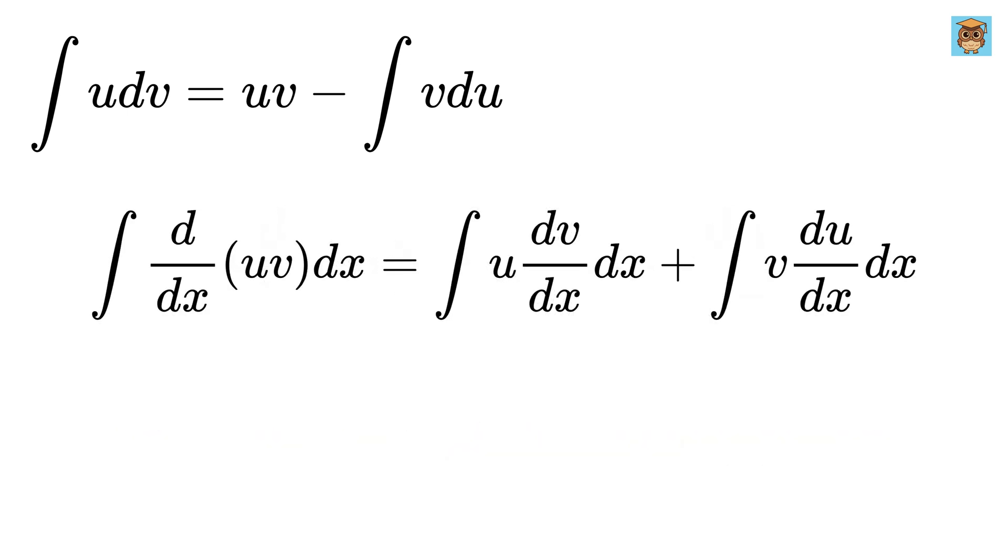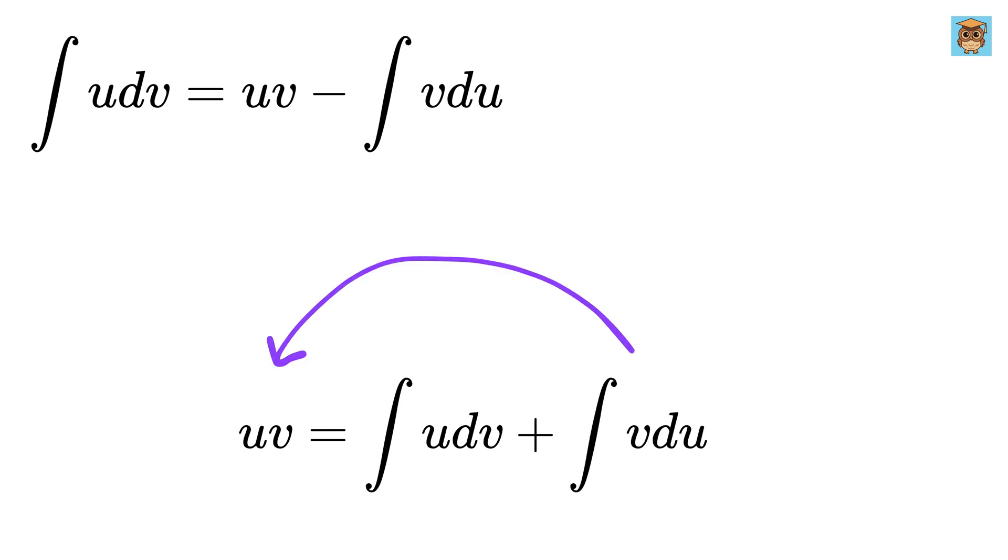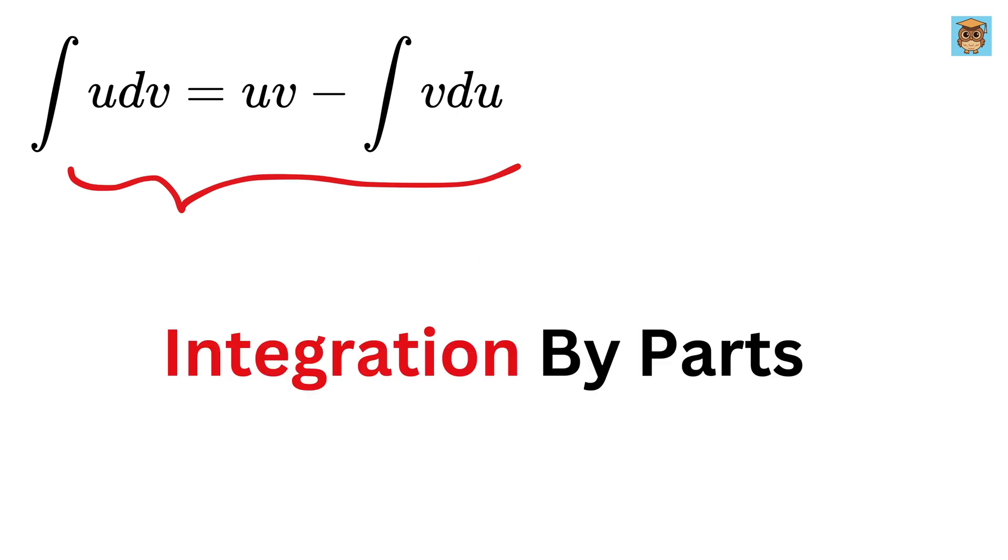Now integrate both sides with respect to x. Here both the integral and derivative will cancel out to make it uv. On right side both dx will get cancelled out and we are left with integral u dv plus integral v du. Take this on left side to get this, which is none other than integration by parts.